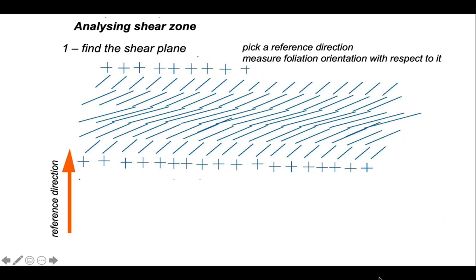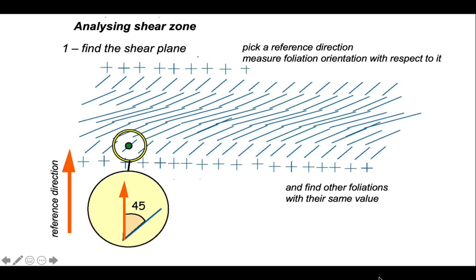So, set up a reference direction. This is entirely arbitrary. It doesn't have to be north-south. It can be any orientation you like, as long as it's fixed. And we're going to measure the orientation of foliations with respect to this reference direction. So, here's some foliation that is making an angle of 45 degrees with respect to the reference direction. Now we need to find some other foliations along the shear zone with this same orientation of 45 degrees with respect to the reference direction. Here we go. So this is an isogon of 45 degrees.